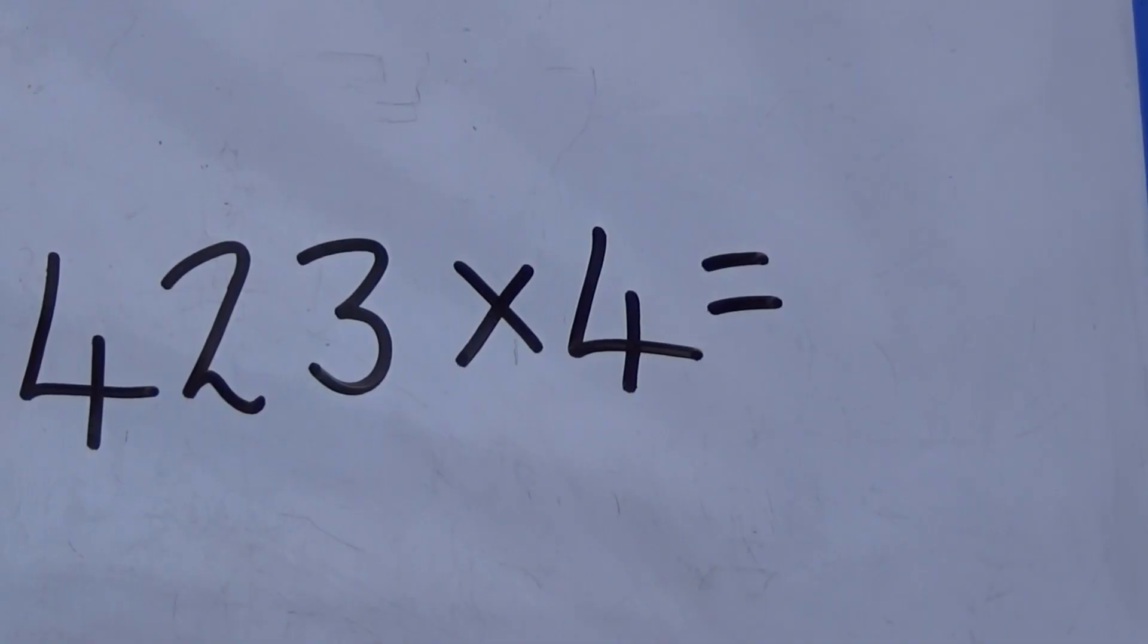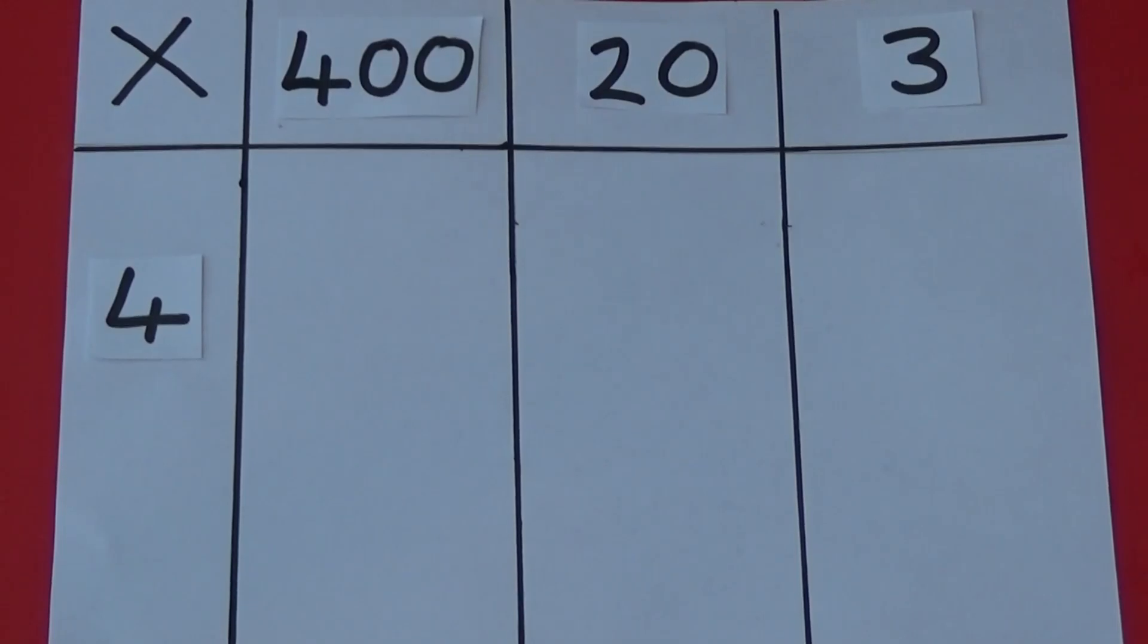I'm going to look at 423 multiplied by 4. I have drawn out my grid and partitioned 423 into hundreds, tens and ones. Underneath, I have written the number I am multiplying, which is 4.